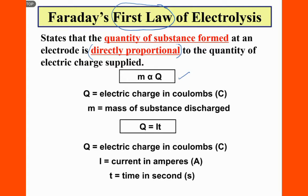As the electric charge is in Coulombs, the formula is written as Q equals I times T, where I is the current in Amperes and T is the time in seconds.